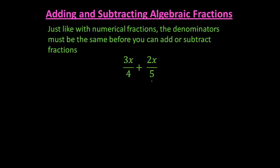Taking a look down here, I've got 3x over 4 plus 2x over 5. My lowest common multiple or lowest common denominator in this case is going to be 20. So in order to add these fractions, I first need to change the fractions or make them equivalent fractions with a common denominator of 20.